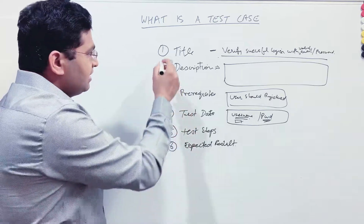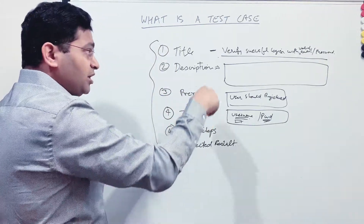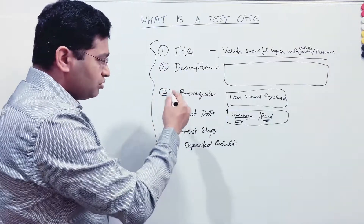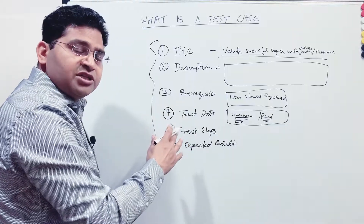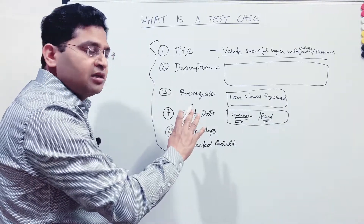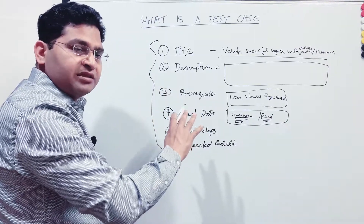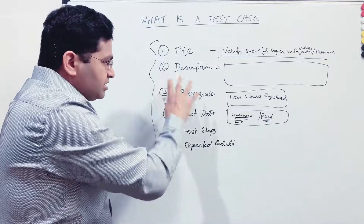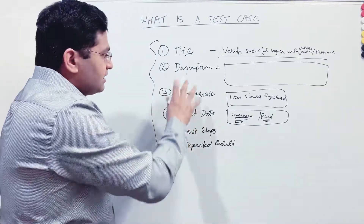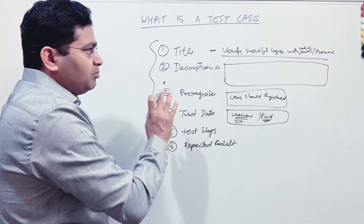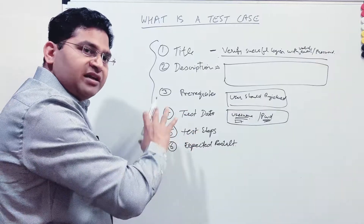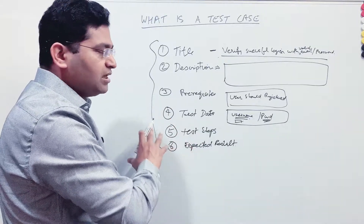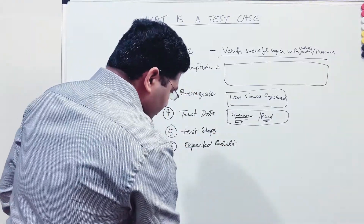We have understood what exactly is a test case and what all key information needs to be there in the test case. Besides this information, there is a lot more information that needs to be there in the test case. This is the key information I am covering in this tutorial, but all other information that needs to go into the test case I'll cover in the Excel sheet in the next tutorial when we understand how to write the test case. This information is mostly mandatory in all test cases. Other information could be mandatory or optional, depending on the type of the particular test case and the functionality you are going to test.